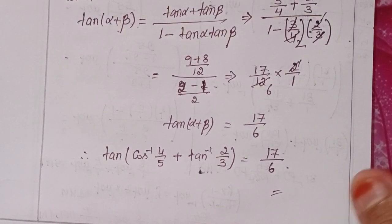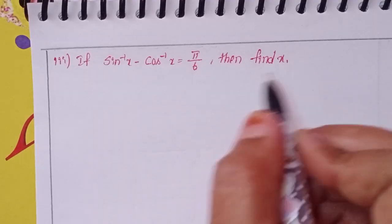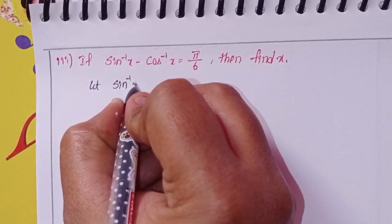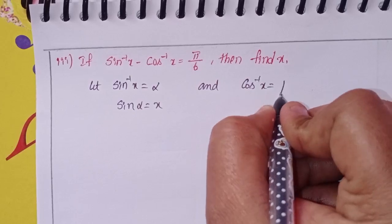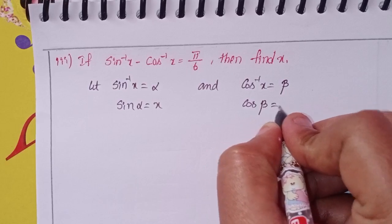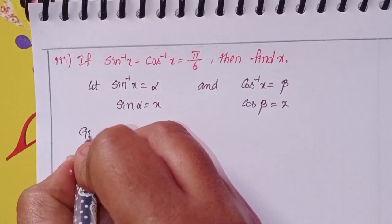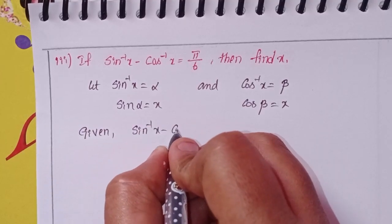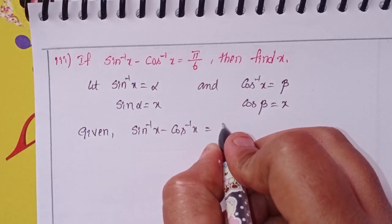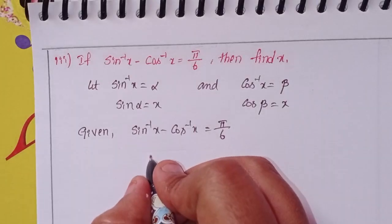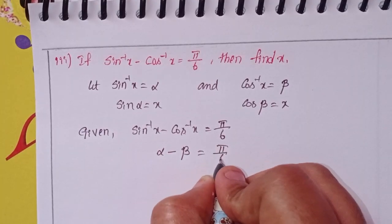Next, third problem: if sin⁻¹x - cos⁻¹x = π/6, find x. Let sin⁻¹x = α, so sin α = x. And cos⁻¹x = β, so cos β = x. The given condition is sin⁻¹x - cos⁻¹x = π/6, that is α - β = π/6.